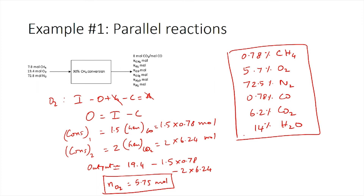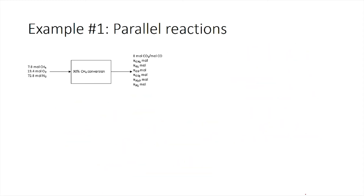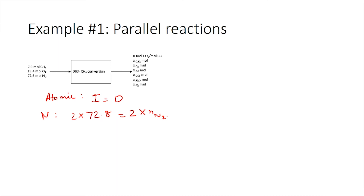Now let us solve the same problem using atomic species balances and compare answers to validate both techniques. In atomic species balances, generation and consumption are zero since atoms cannot be created or destroyed; at steady state accumulation is also zero, so all atomic balances take the form input = output. For nitrogen: 2 × 72.8 (in) = 2 × N_N₂ (out), giving N_N₂ = 72.8 moles.